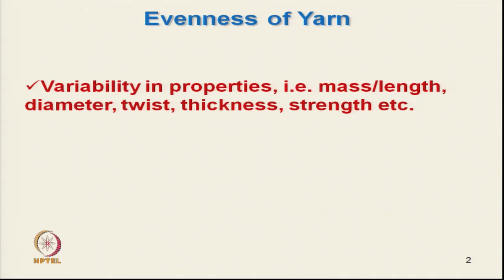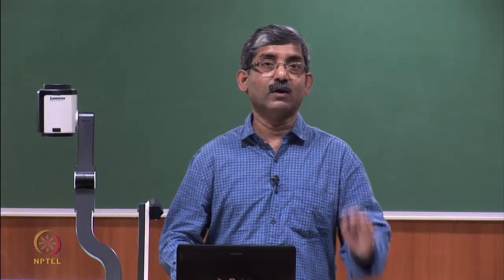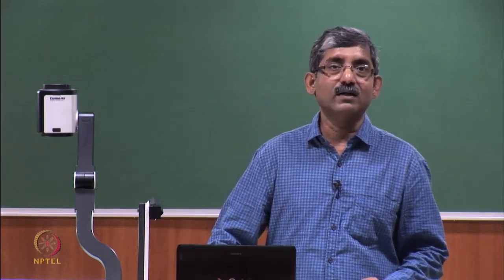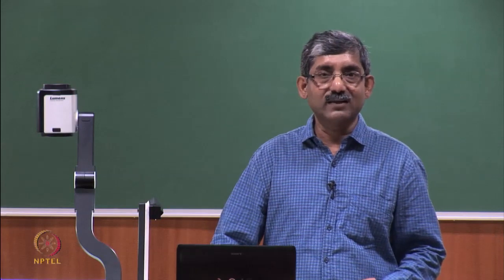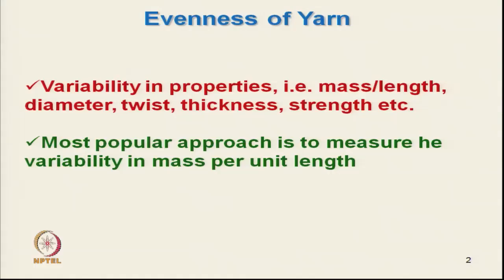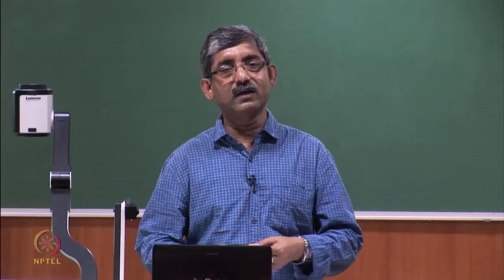There are a wide range of variabilities, but the most important variability which affects all other characteristics is variation in mass per unit length, or variation in diameter, which are interlinked. Most testing instruments which measure variability in yarn do so in terms of either mass per unit length or in terms of diameter.